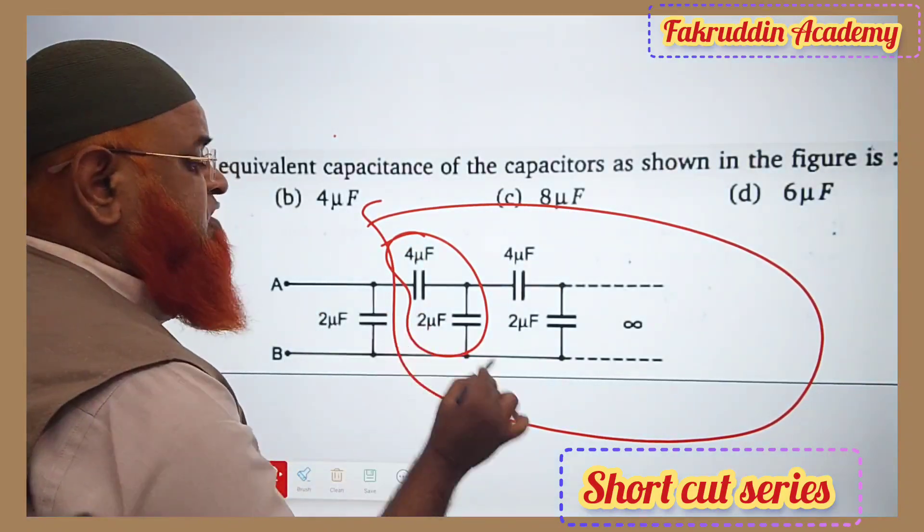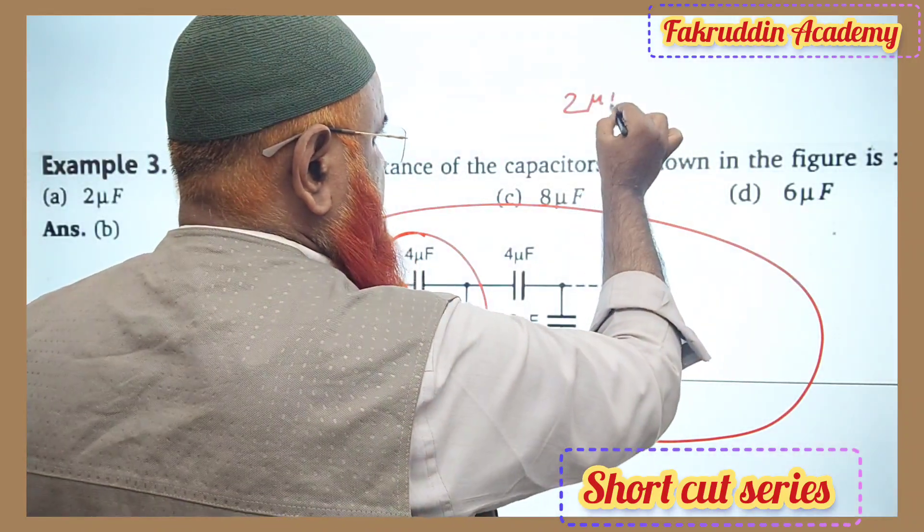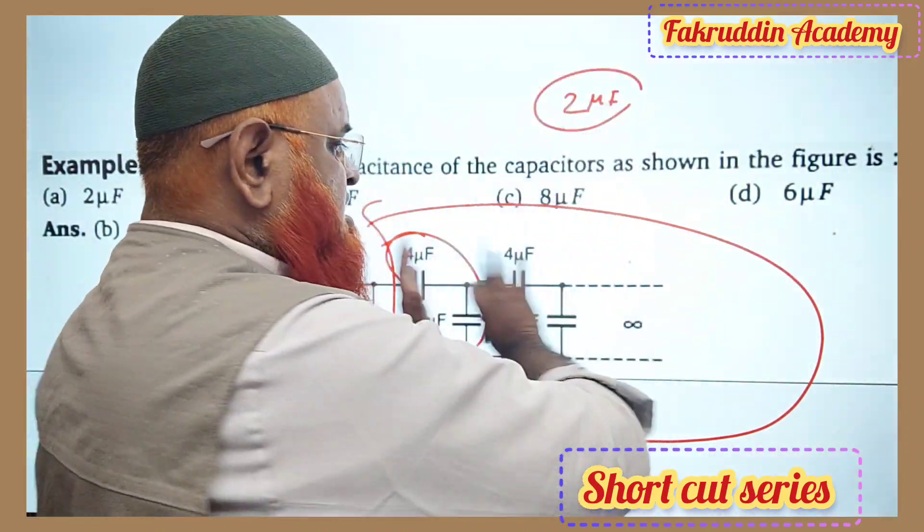So for this all infinite series, among 4 and 2, 2 microfarads is going to be your answer. So 2 microfarads is going to be your answer for this infinite series.